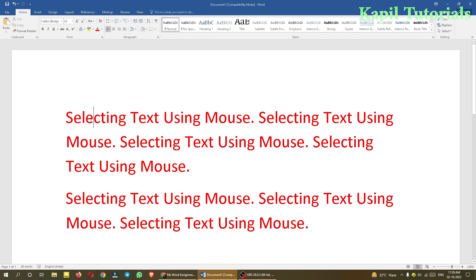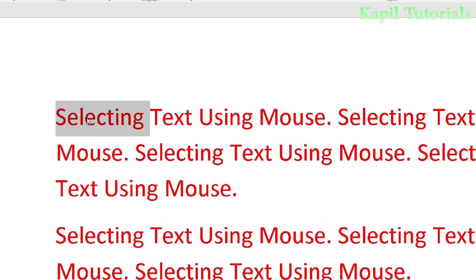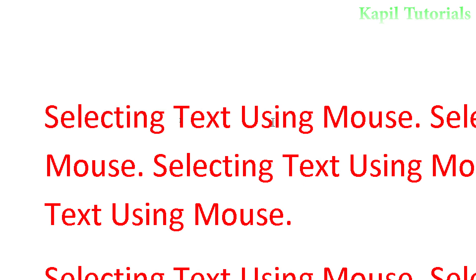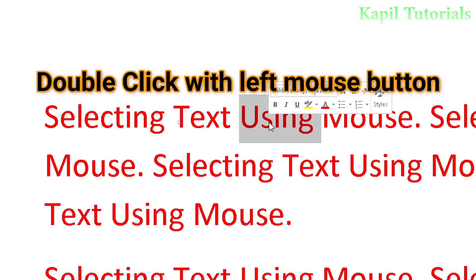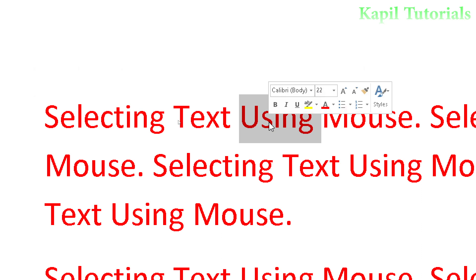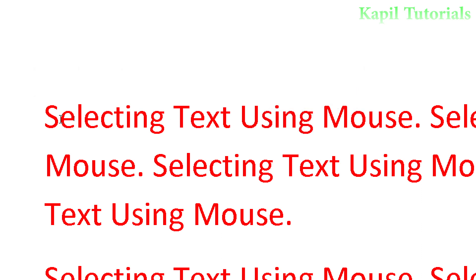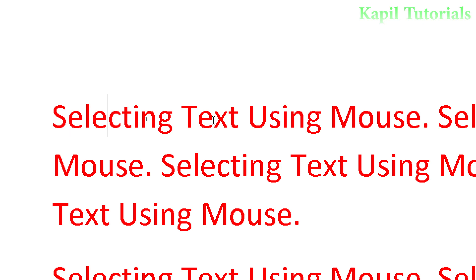These are all alphabets like S, E, L, E — different alphabets — but if I want to select the whole word I double-click. You see, this has been selected. Again it's been selected — a particular word is selected by double-clicking. So I hope this is clear.